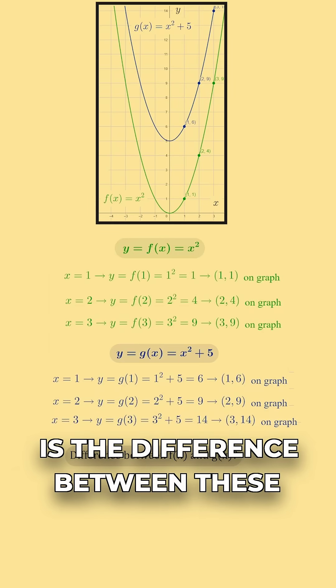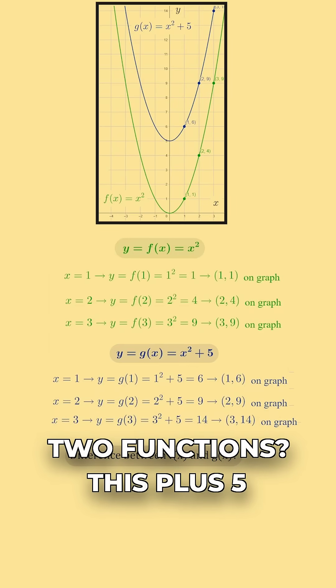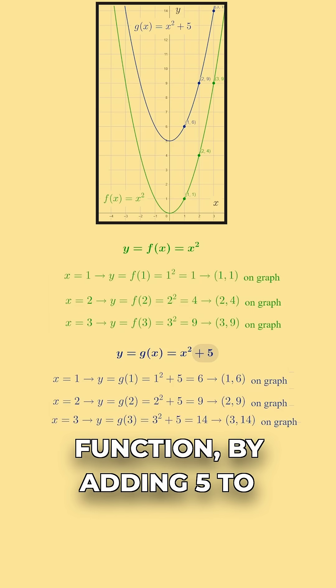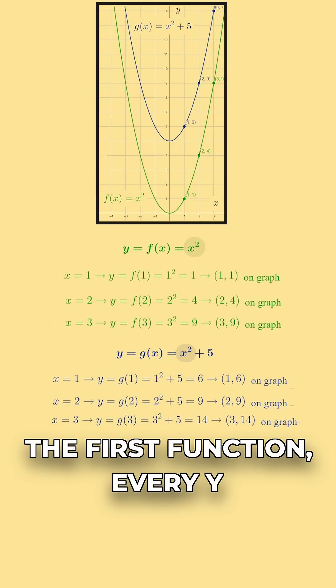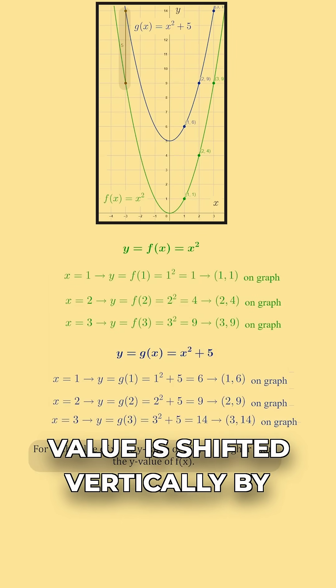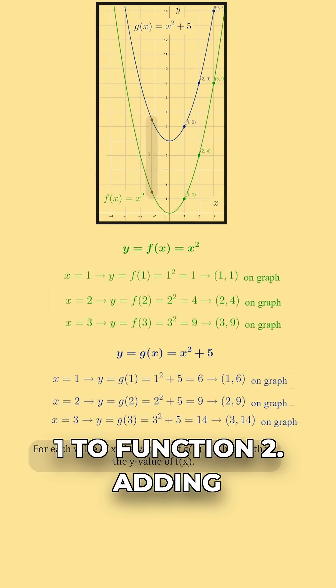Well, what is the difference between these two functions? This plus 5 right here. In the second function, by adding 5 to the first function, every y value is shifted vertically by 5 to get from function 1 to function 2.